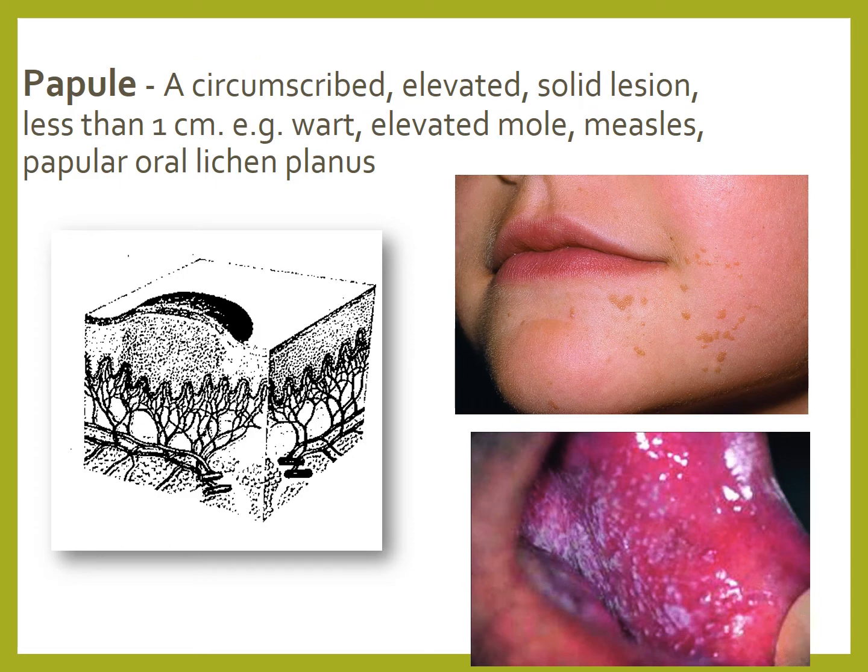A papule is a circumscribed elevated solid lesion less than 1 cm in size. Examples include a wart, elevated mole, measles, or papular oral lichen planus, as seen in the image.